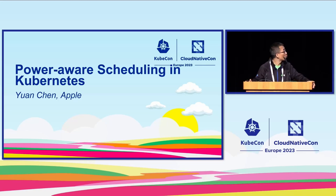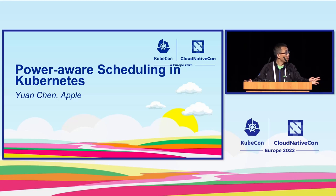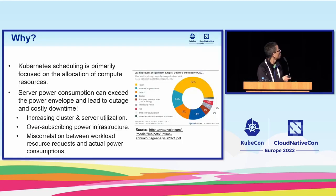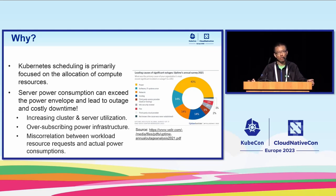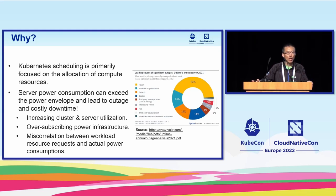Let's get back to the topic: power-aware scheduling in Kubernetes. I hope I can bring the attention to it in the next five minutes. Power outage or service downtime is the top one reason for failures in data centers and clusters. Kubernetes has been used by more and more applications and the cluster size is getting larger and larger, so we have a high risk of overloading the power supply.